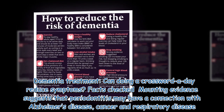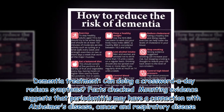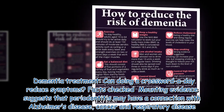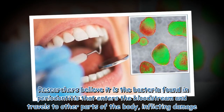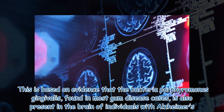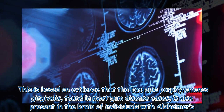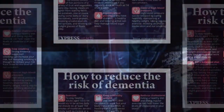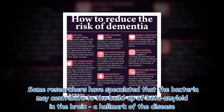If left untreated, the infection can lead to the development of other seemingly unrelated conditions. Mounting evidence suggests that periodontitis may have a connection with Alzheimer's disease, cancer, and respiratory disease. Researchers believe it is the bacteria found in periodontitis that enters the bloodstream and travels to other parts of the body, inflicting damage. This is based on evidence that the bacteria Porphyromonas gingivalis, found in most gum disease cases, is also present in the brain of individuals with Alzheimer's. Some researchers have speculated that the bacteria may contribute to the buildup of beta-amyloid in the brain, a hallmark of the disease.